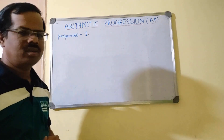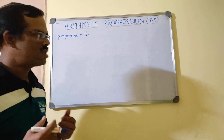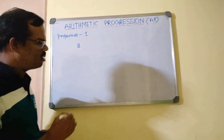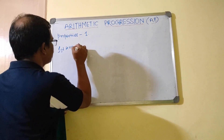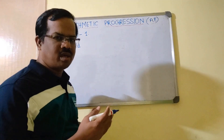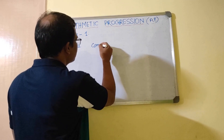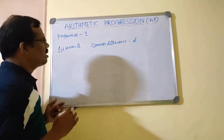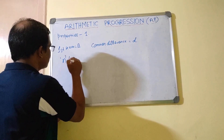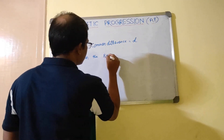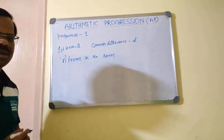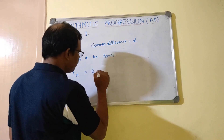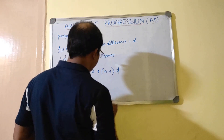The first property we will find is the definition of the last term, or nth term. Let us say the first term is 'a', the difference between every term is called the common difference, which is denoted as 'd', and let us assume there are n terms in the series. Then the nth term, t-n, will be equal to a plus (n minus 1) into d.